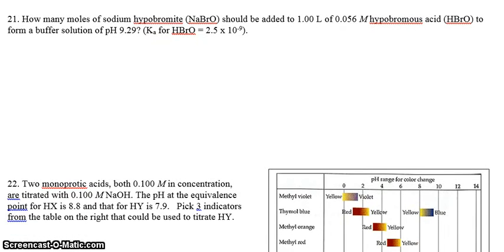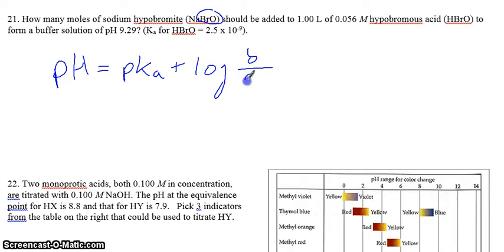How many moles of sodium hypobromite should be added to one liter of hypobromous acid to form a buffer solution of pH 9.29? So it's going to give us the Ka for hypobromous acid. Essentially, we're using the buffer equation, which is pH equals pKa plus log of base over acid. So, sodium hypobromite is actually the base, so we're going to have to solve for this guy.